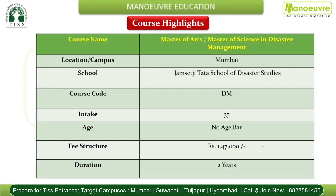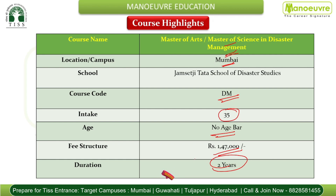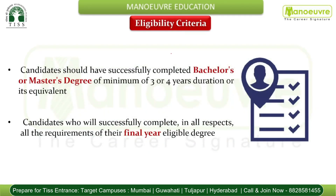Course highlights: The program is a Master of Arts or MSc in Disaster Management, located at the Mumbai campus. The course code is DM. Seat intake is 35, there is no age bar, the fee structure is ₹1,47,000, and the duration is two years. The fee is quite nominal for a program that is extremely rigorous, includes fieldwork and research, and is a well-updated curriculum.